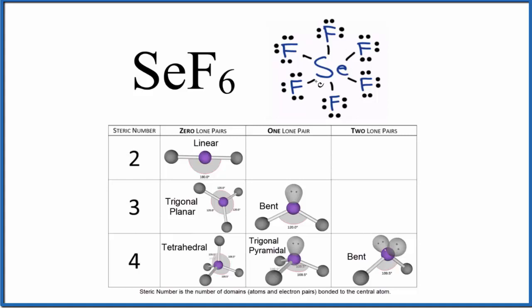You can see we have our central selenium atom has one, two, three, four, five, six bonds. That's okay. It can have an expanded octet.